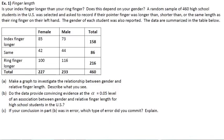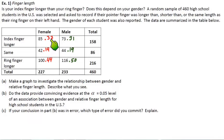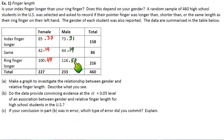Part A says to make a graph to investigate the relationship between gender and relative finger length and describe what you see. It would not be fair to graph the observed counts directly because there was a different total for the female and male groups. So we should convert these to percentages. In red, the female percentages: 37% with a longer index finger (85 out of 227), 19% the same, 44% with a longer ring finger. In green, the male percentages: 31% longer index finger (73 out of 233), 19% same, and about 50% longer ring finger.